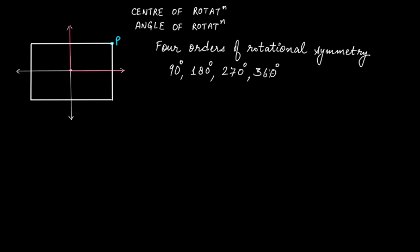Now, how many lines of symmetry does a square have? If we take a horizontal line through the center passing through the midpoints of the top and bottom sides, it divides the square into two equal halves — upper and lower — which are mirror images of each other. That is one line of symmetry. Similarly, a vertical line through the center and midpoints of the left and right sides gives another line of symmetry.